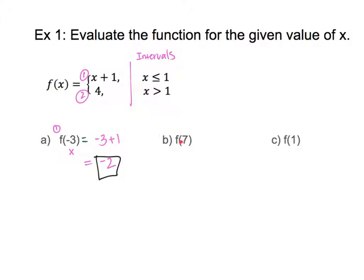For part B, x is 7. Seven is bigger than 1, so I use the second equation. The second equation just says 4 — there's no x to plug into. So the answer is just 4. Any time you have a constant as your equation with no x next to it, every x value in that interval gives you the same output. So the output is always 4.